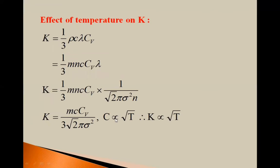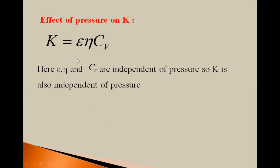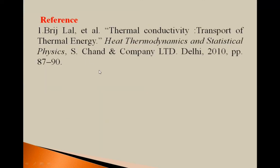Now we will see the effect of temperature on the thermoconductivity coefficient K. Since K = (1/3)mnc·Cv·λ and the mean free path λ = 1/(√2·π·σ²·n), this gives K = mc·Cv / (3√2·π·σ²). Since the average velocity c is proportional to √T, K is directly proportional to √T. Regarding the effect of pressure: since ε, η, and Cv are all independent of pressure, K is also independent of pressure.